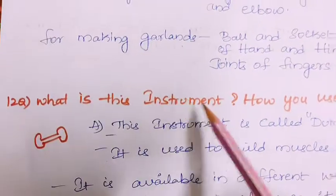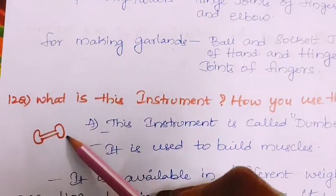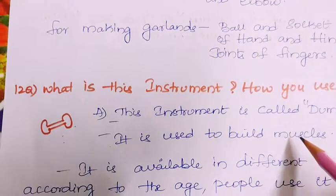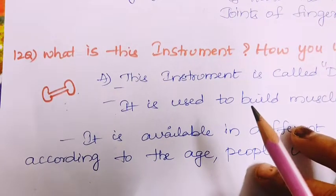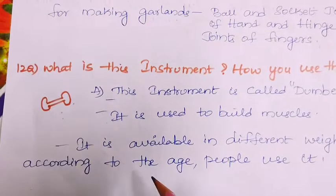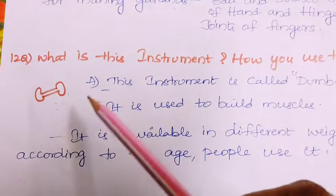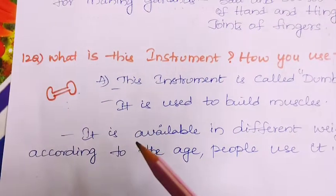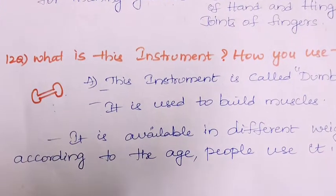Twelfth question: what is this instrument and how do you use it? This instrument is called a dumbbell. It is used to build muscles, and you can see this type of instrument in the gym for weight-lifting exercises. It is available in different weights according to age and requirement — people add weights to it and use it for lifting. These are the questions and answers for the 14th lesson, Movements in Animals. Thank you, children.